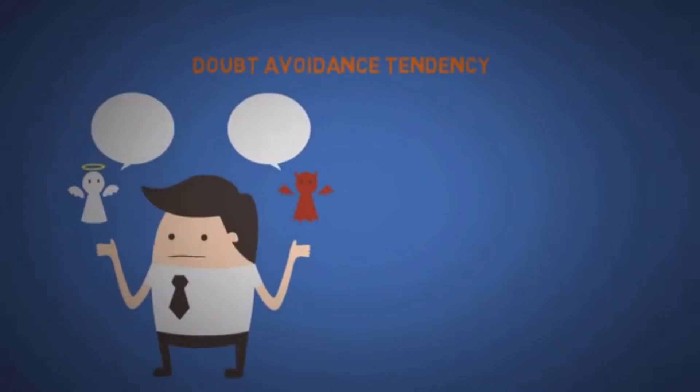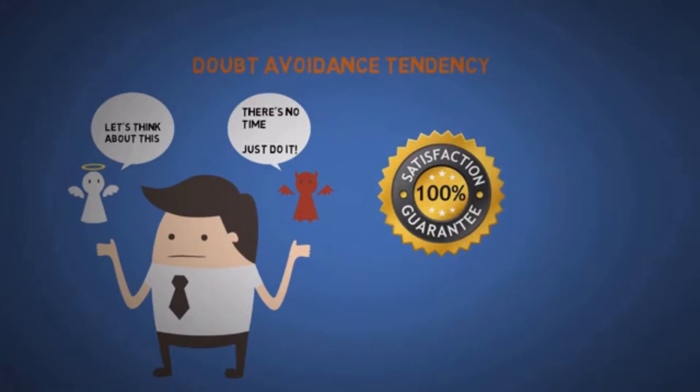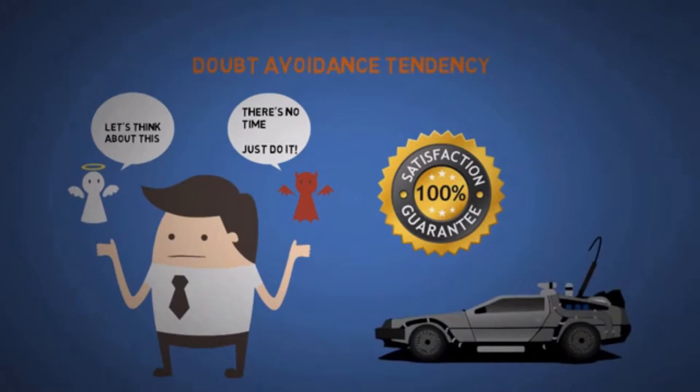The fourth is doubt avoidance tendency. If we are unsure about a decision, we try to quickly remove any doubt by making an ill-informed quick decision. So if you want to become more persuasive, then simply increase your certainty. Like if you don't enjoy the rest of this video, then I promise you a free time machine so I can refund your time. No questions asked.